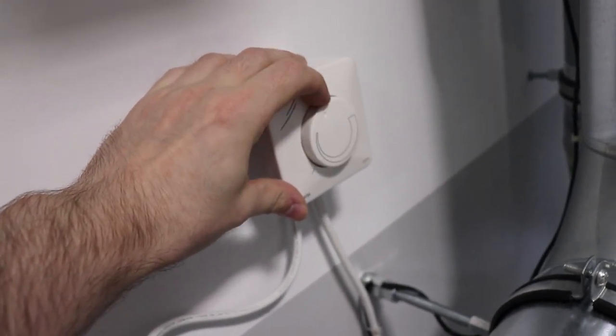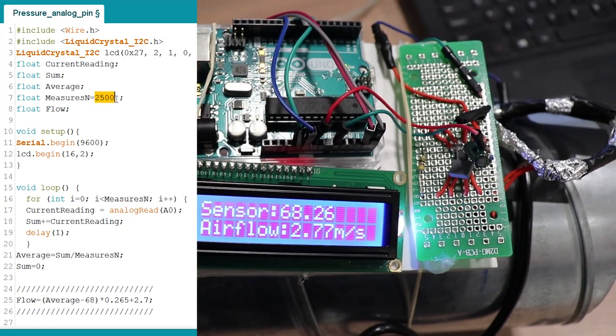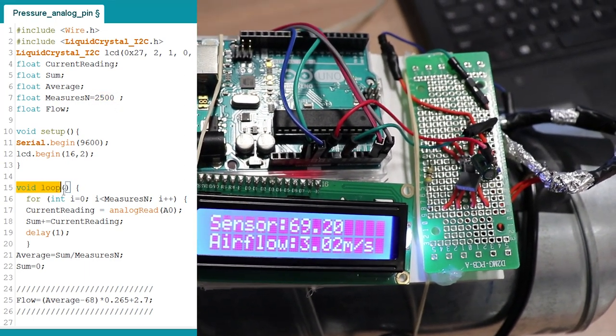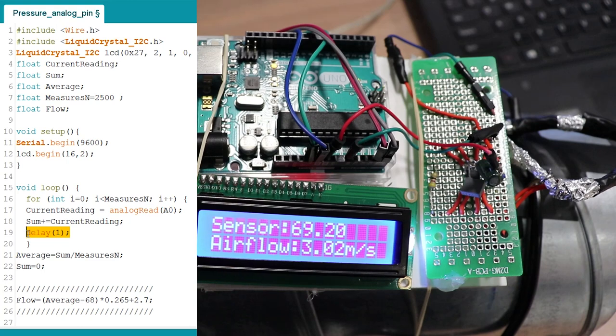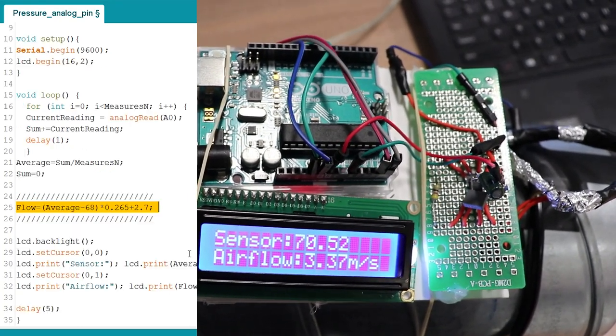As for the Arduino sketch, I wrote a program that is doing 2500 readings in a loop with 1 millisecond increments. Then it averages them and inputs the result to the linear equation. As a result I got airspeed measurement of the full work range of this fan.